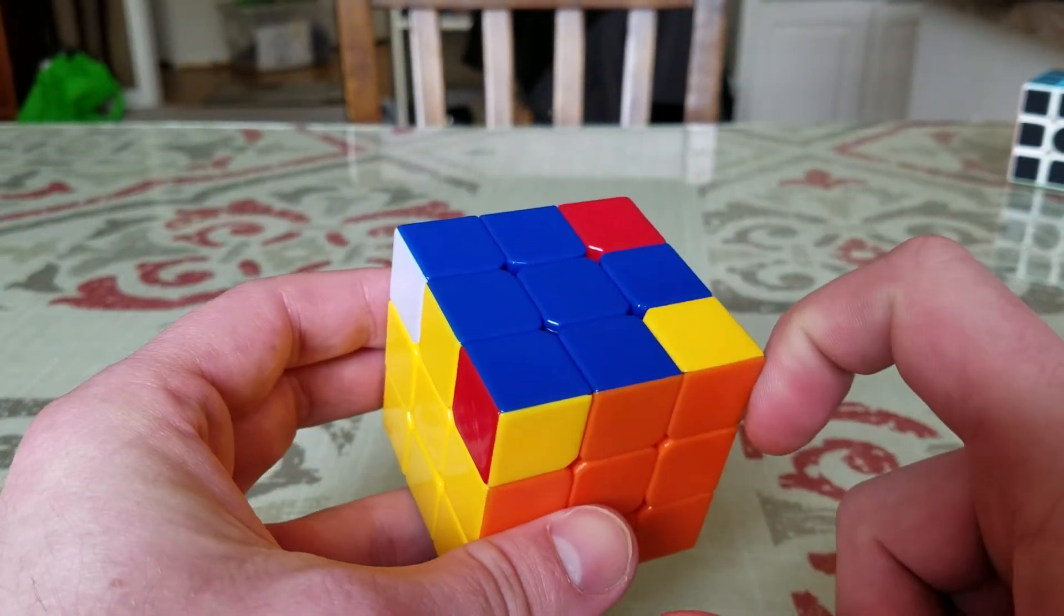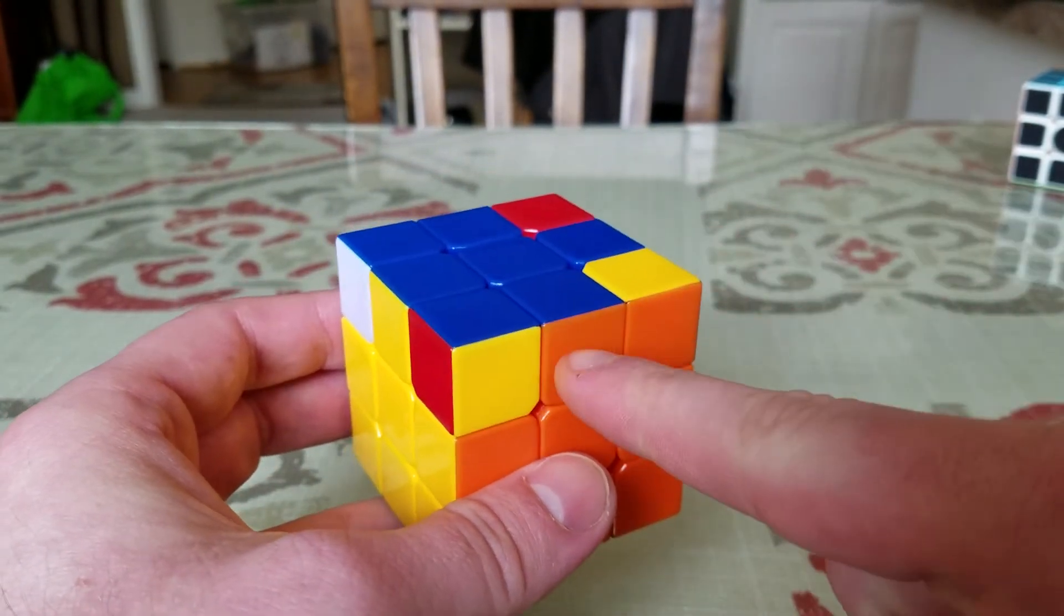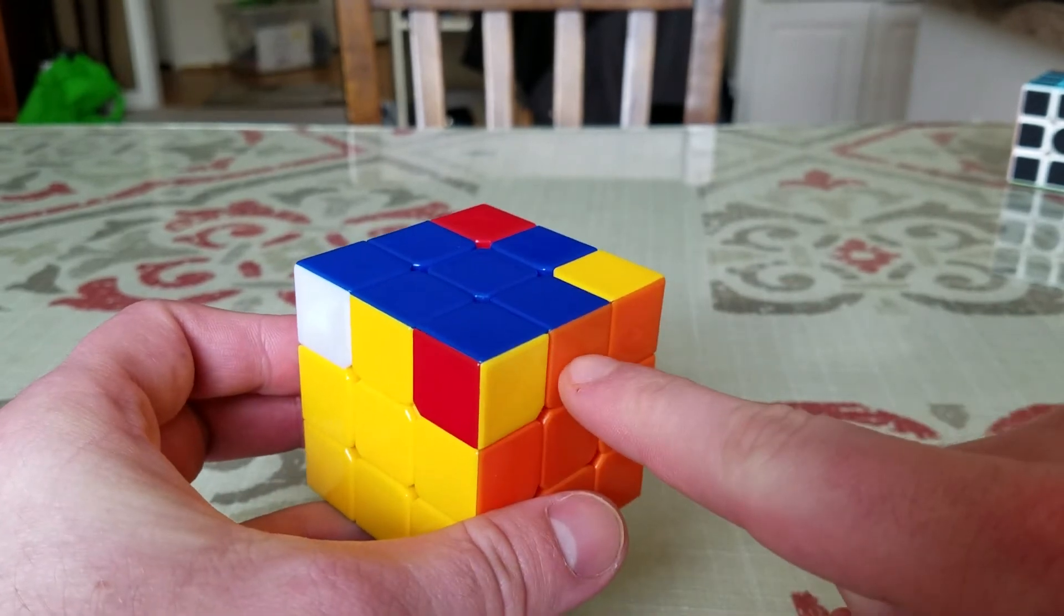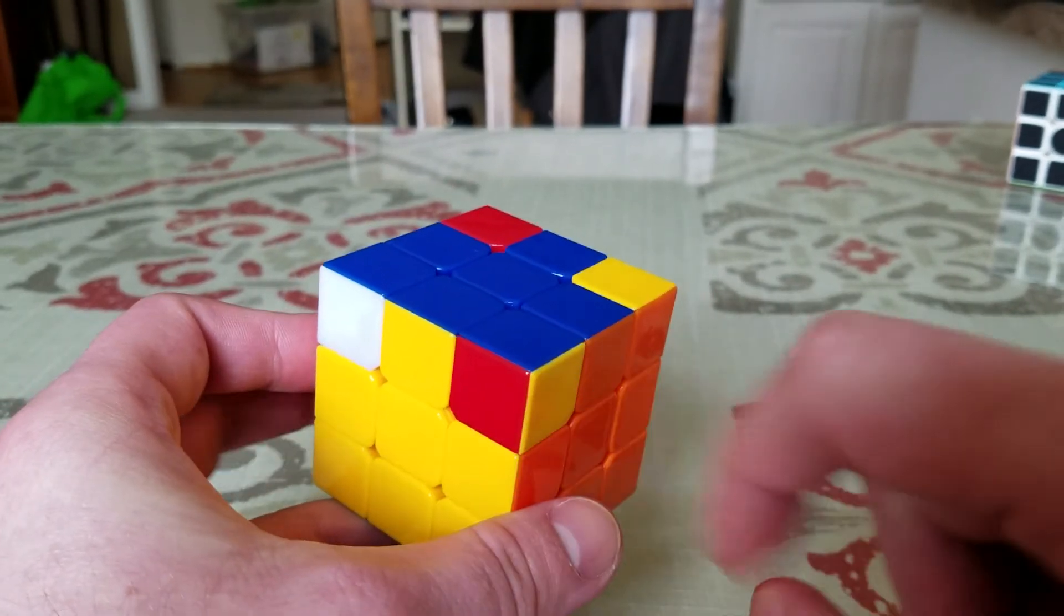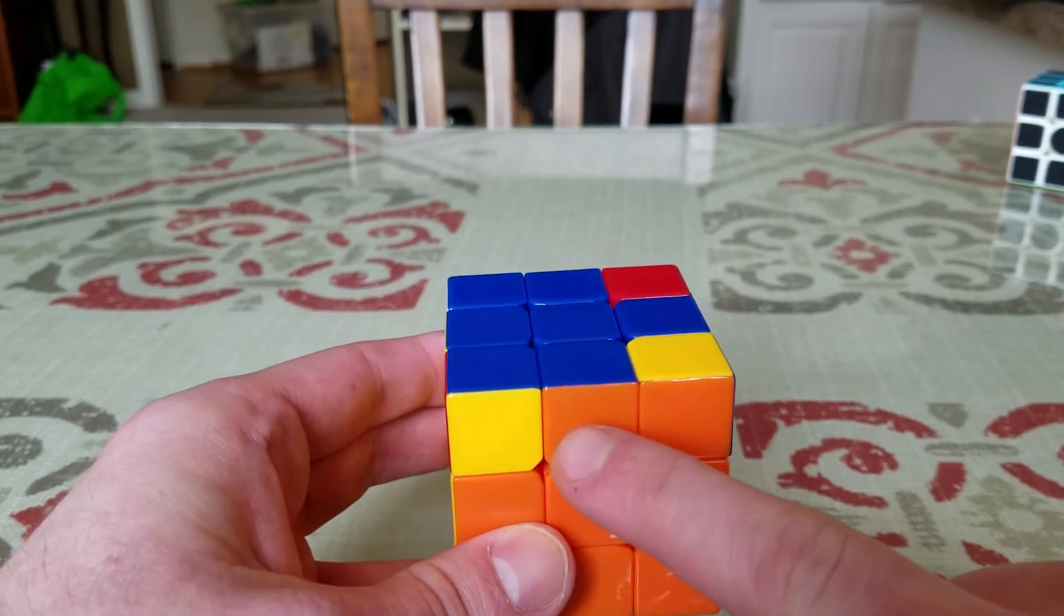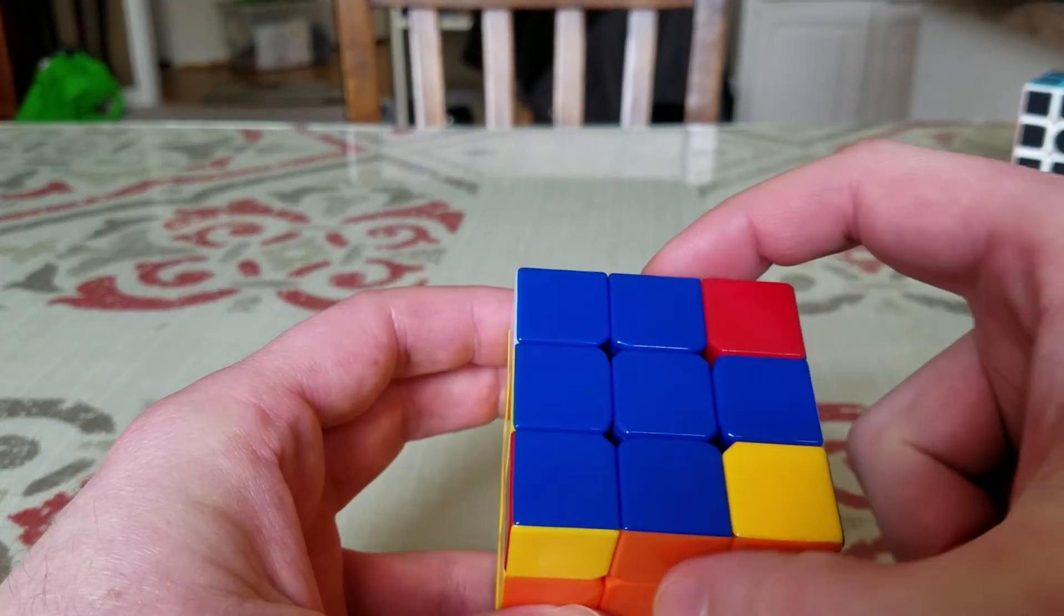When you start this step, you may not have two adjacent sides that are correct at the beginning. Sometimes you will end up with opposite sides matching, but you cannot make two adjacent pieces correct. In that case,